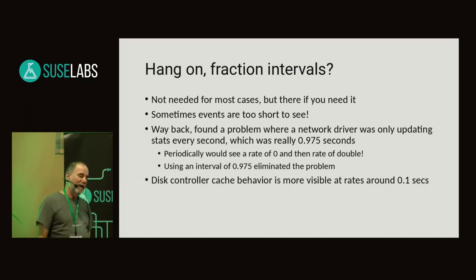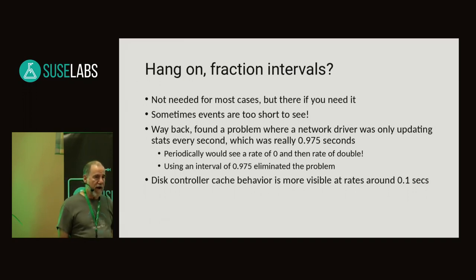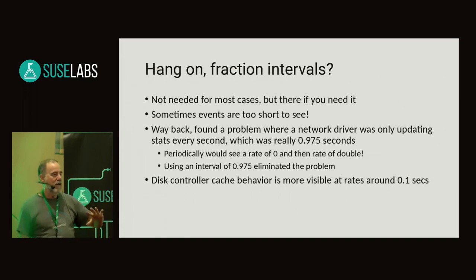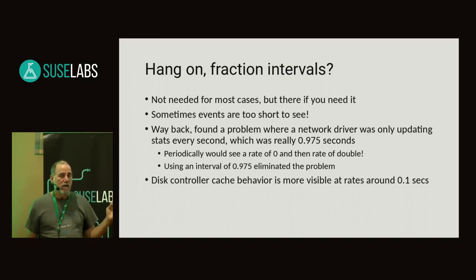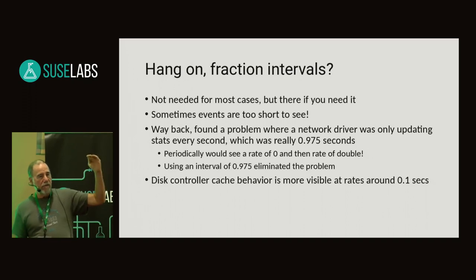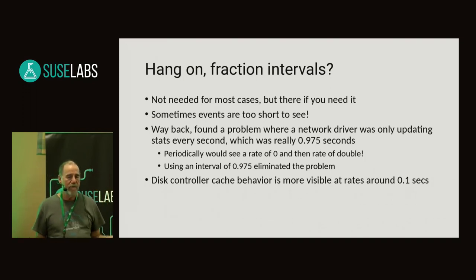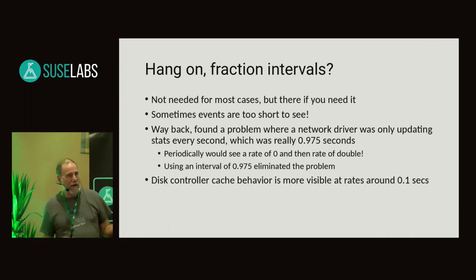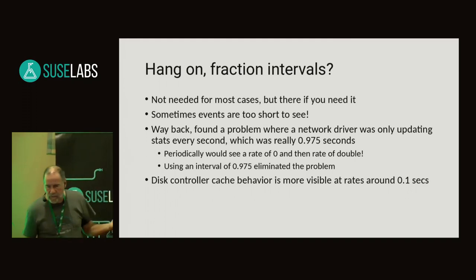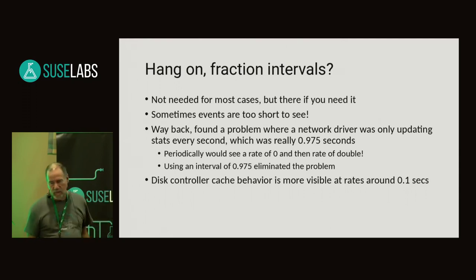As a historical anecdote: in the earlier days of Collectal, we were noticing that when monitoring network traffic on a one gigabit link — which meant you could do about 100 megabytes a second — you would see: 100 megabytes, 100 megabytes, 100 megabytes, zero megabytes, 200 megabytes, 100 megabytes, zero, 200. We figured out that the driver was only updating /proc every second. But when you deal with binary, one second turned out to not quite be a second — it was really 0.9275 or 0.975. By running Collectal at a 0.975 interval, you actually got rid of that zero/200 phenomenon.